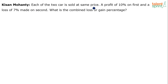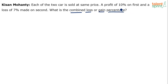Each of the two cars is sold at the same price. A profit of 10% on the first and a loss of 7% is made on the second. We have to find out the combined loss or gain percentage. Remember, each of these two cars is sold at the same price — that is the important point.